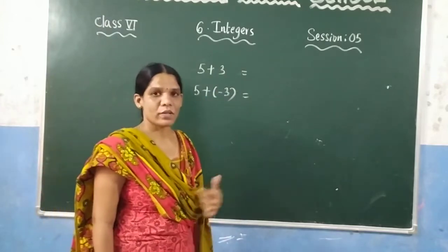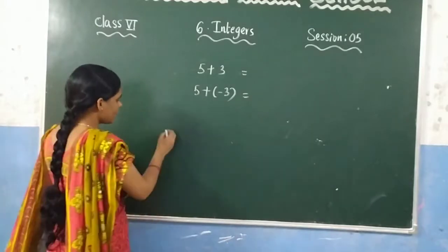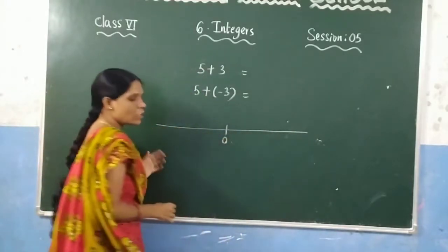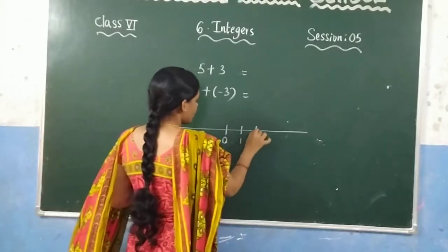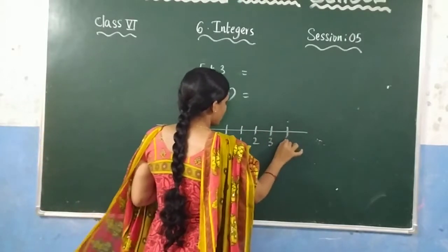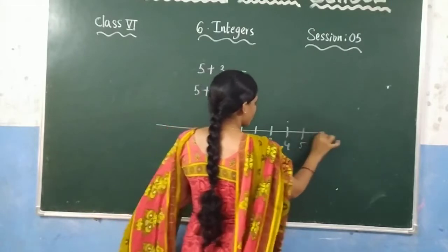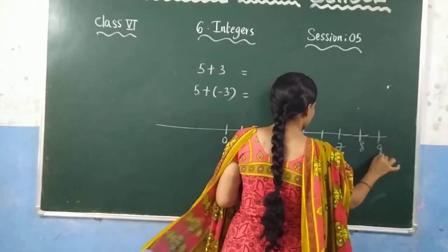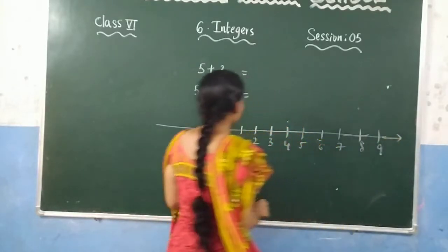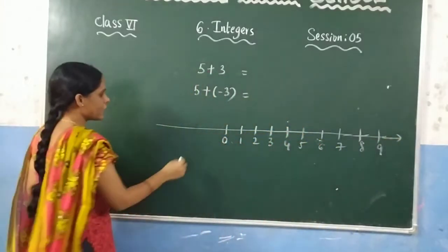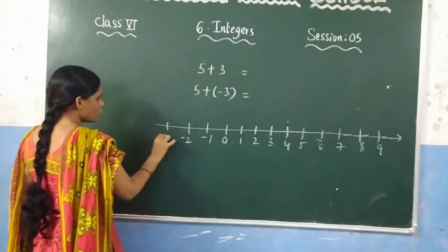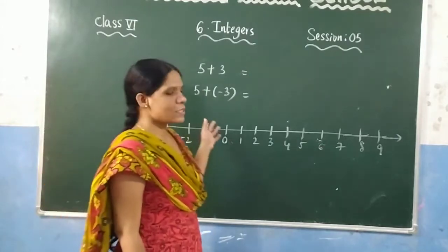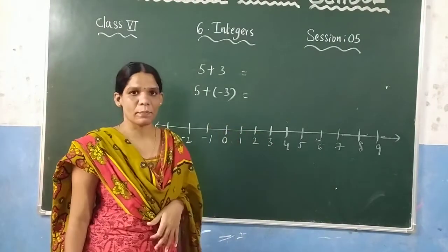Let us see what happens on the number line. Draw a number line with 0 in the middle. To the right side are the positive numbers: 1, 2, 3, 4, 5. And to the left side are the negative numbers: minus 1, minus 2, minus 3, and so on. Now let us see how to represent 5 plus 3 on the number line.